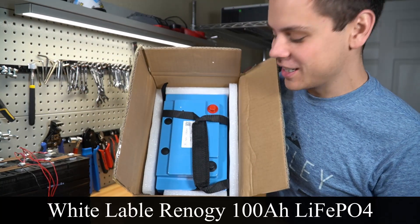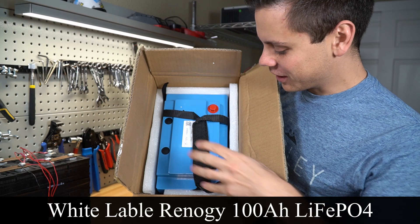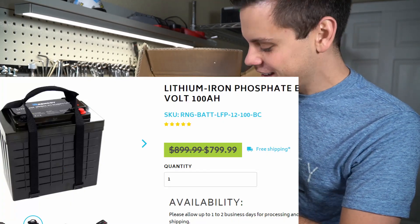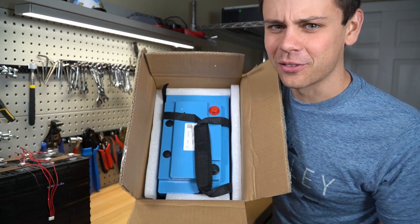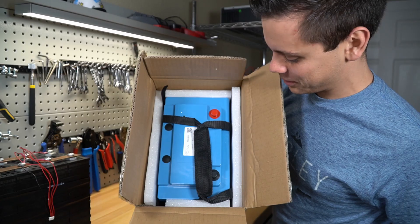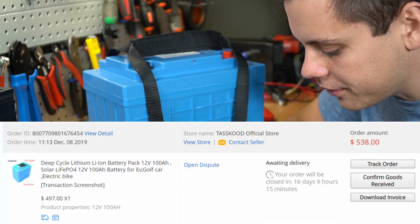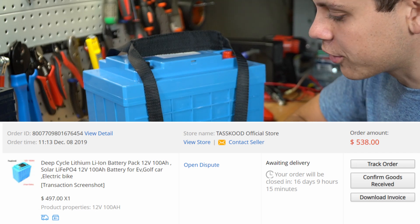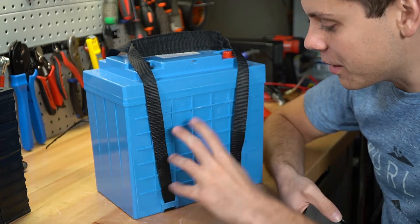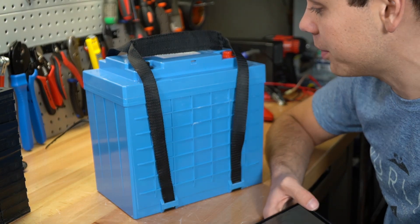This is a white label Renogy lithium iron phosphate. This is the same one that they sell for like nine hundred dollars, but I got for like five hundred dollars off of AliExpress. We're gonna test it out. The total cost was five hundred and thirty eight dollars with tax and shipping for a 100 amp hour lithium iron phosphate drop in lead acid replacement.